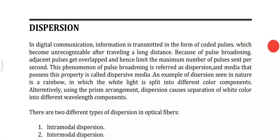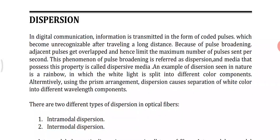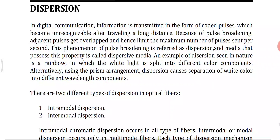Our next topic is signal distortion in optical fibers, that is, dispersion. Dispersion means the optical signal causes distortion for both digital and analog transmission along the optical fibers. An optical signal is distorted as it travels along a fiber. The distortion is due to intramodal dispersion and intermodal delay effect. In digital communication, information is transmitted in the form of pulses, but when traveling for long distances it becomes unrecognizable due to some losses — that is, pulse broadening.